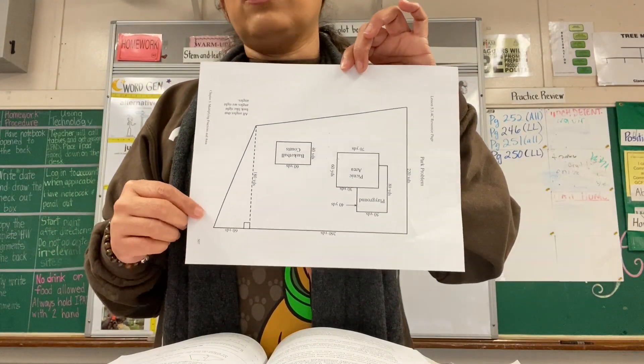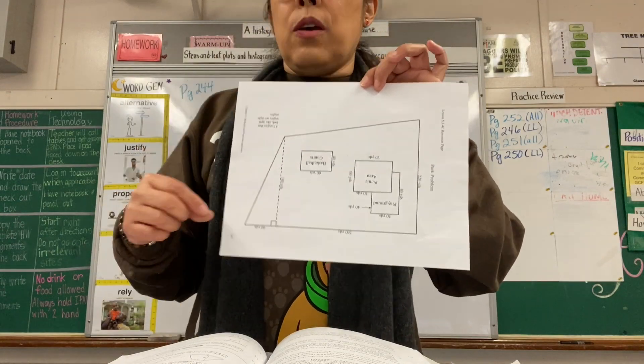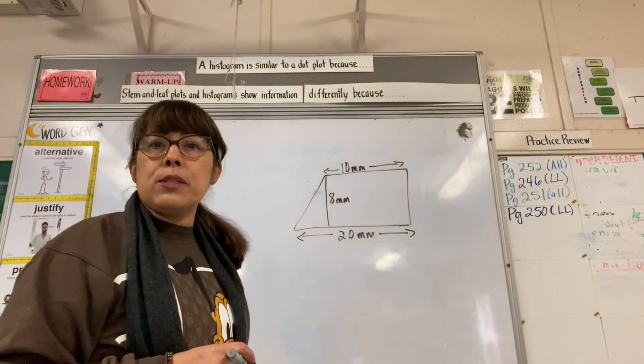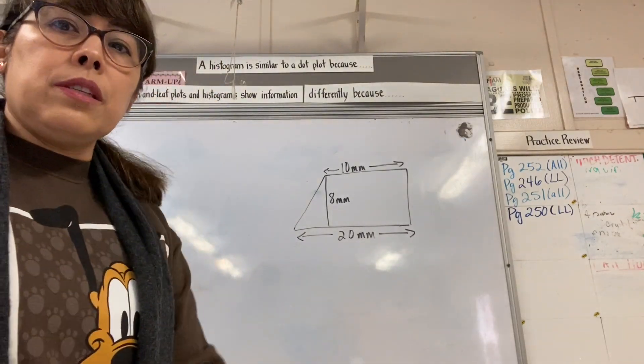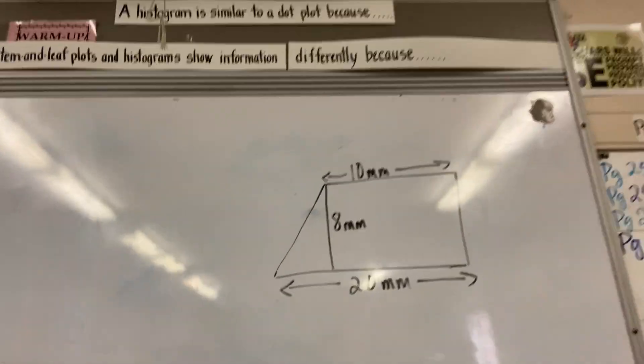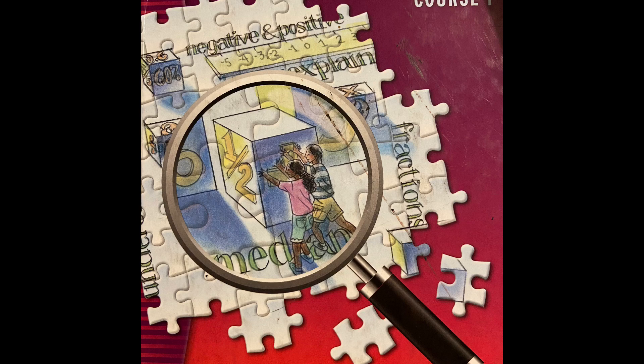I'm going to go step by step on how to find the area of a trapezoid. Let's get started. How do we find the area of a trapezoid? I don't know if you guys can see it, but this is from page 249 in your textbook.